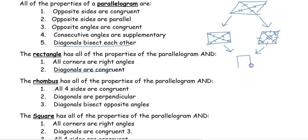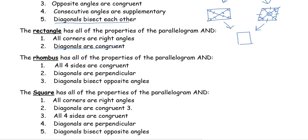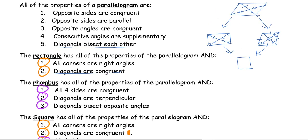Our last shape is the square. The square is also a parallelogram and takes on all parallelogram properties. It also takes on the two additional properties from the rectangle — all corners are right angles and diagonals are congruent — as well as the rhombus properties of four congruent sides and perpendicular diagonals.